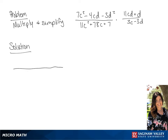We're going to factor the first fraction. In the numerator, we're going to have (7c + 3d)(c − d). The denominator will factor to be (11c + 1)(c + 7).